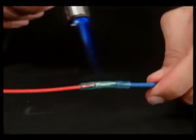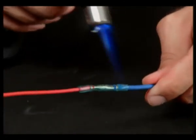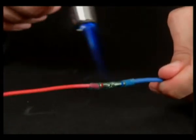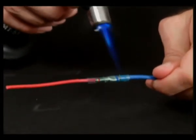Apply heat evenly around the length of the tubing, including the crimp area, from the center out to the ends until the tubing fully recovers and the adhesive flows.